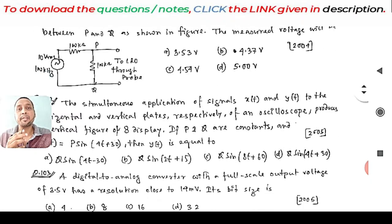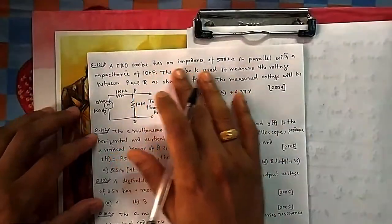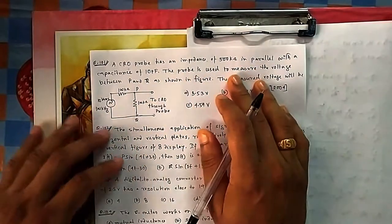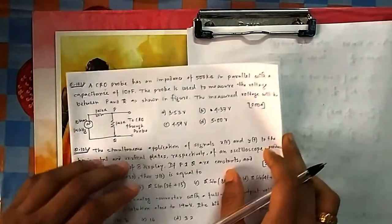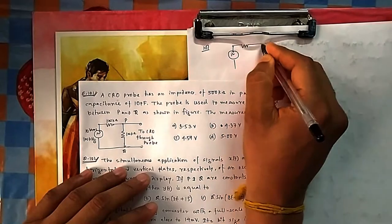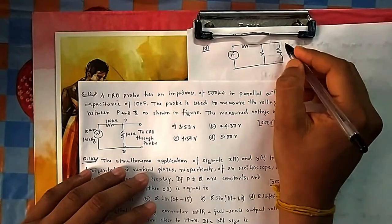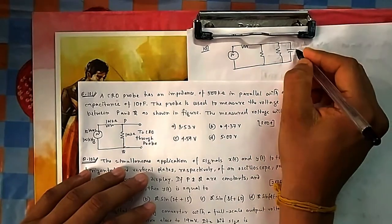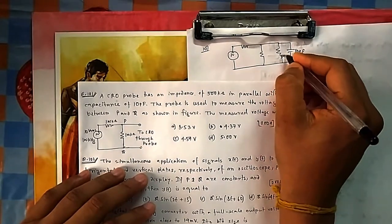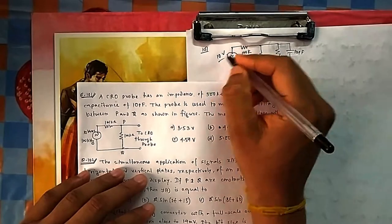Question 101: A CRO probe has an impedance of 500 kilo-ohm in parallel with a capacitance. The probe is used to measure the voltage between P and Q as shown in the figure. The circuit has a voltage source, resistance R1, and the CRO probe which has a resistance of 500 kΩ and a capacitance of 10 picofarad, with resistances of 100 kΩ each.